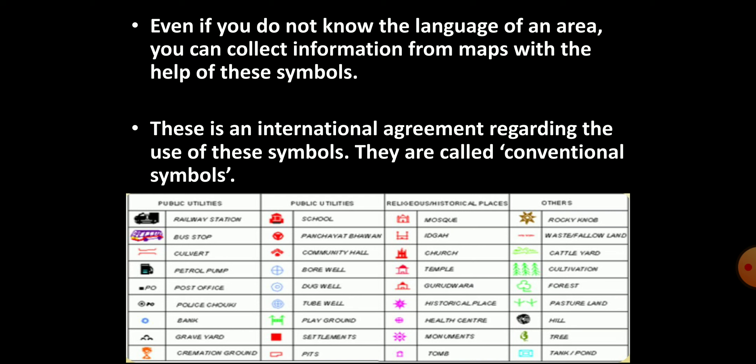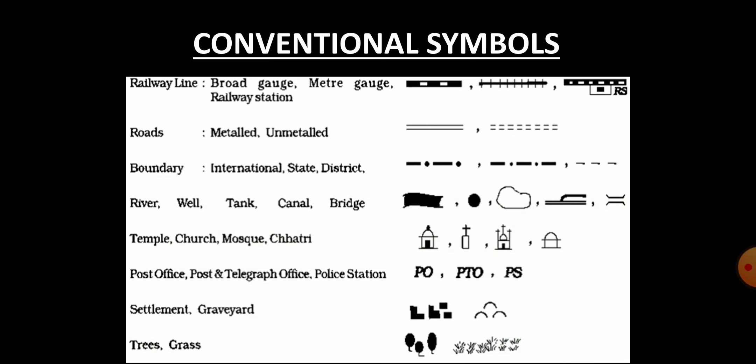There are certain symbols which are universally or internationally accepted. These symbols are known as conventional symbols. Here are some of the conventional symbols: railway line, broad gauge, meter gauge, railway station. They all are shown with different symbols. Then roads: metalled road which is shown through two parallel lines and unmetalled road which is shown through two parallel dotted lines. In the same way, boundaries are also shown with specific symbols for international boundary, state boundary, or district boundary. These conventional symbols help a reader to read the map properly.